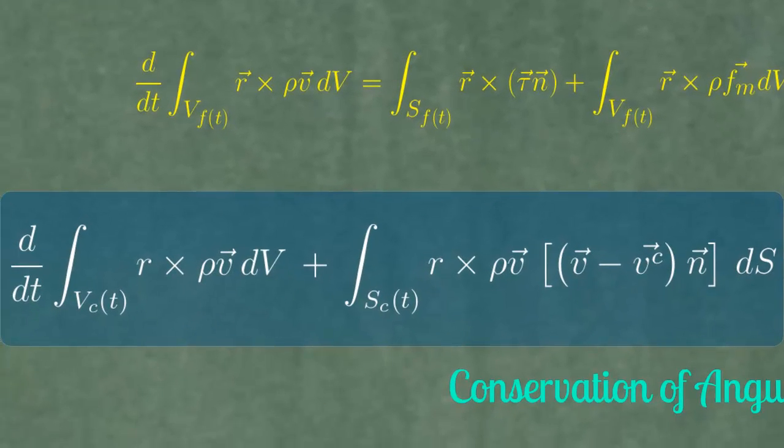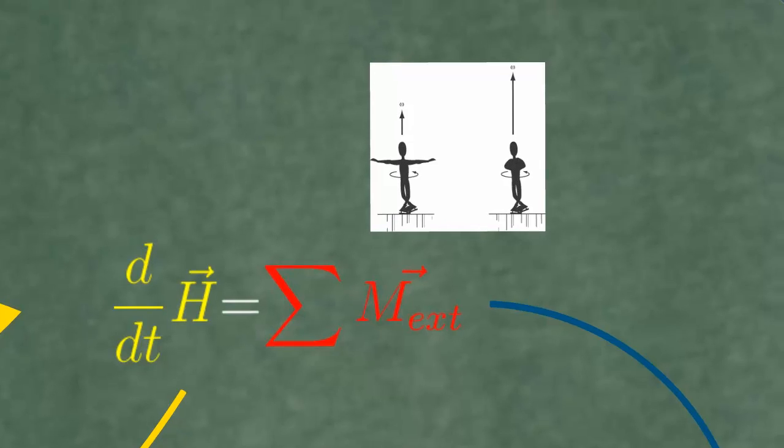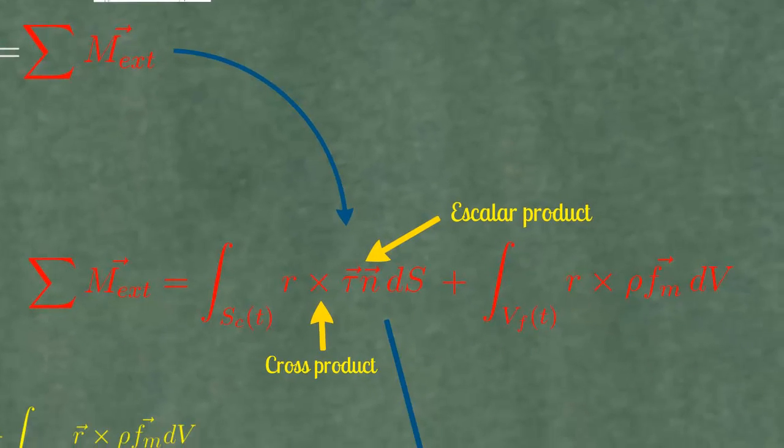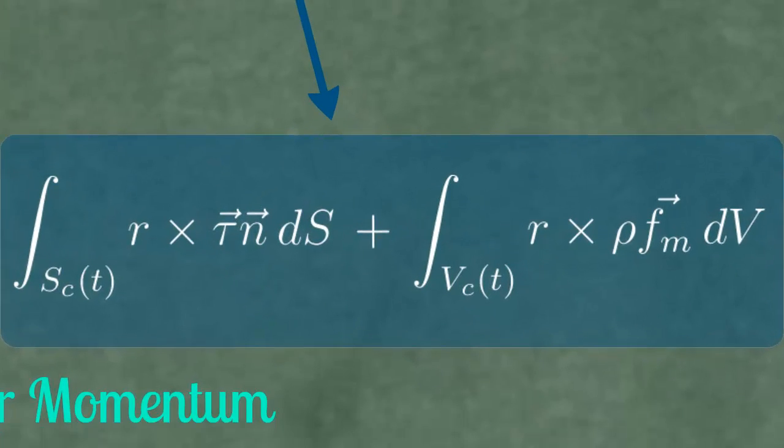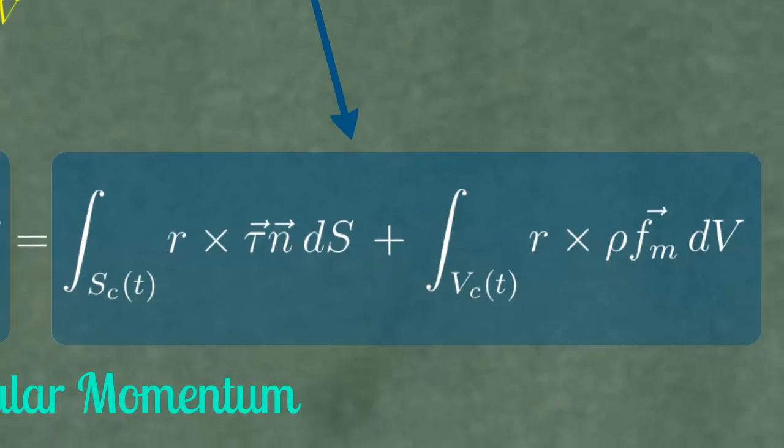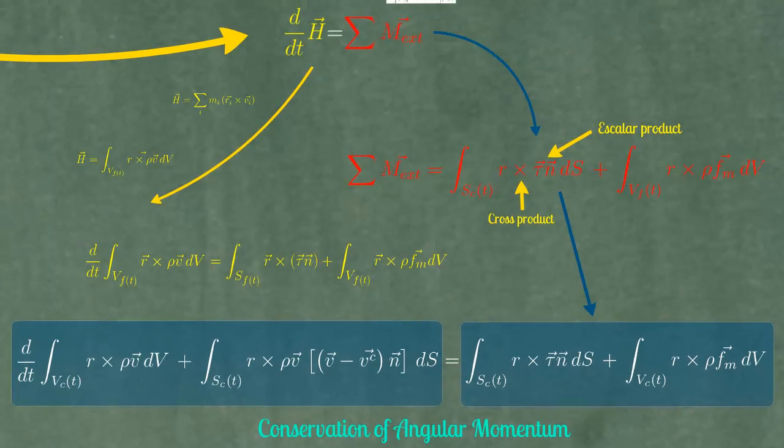The same kind of equations, but with rotational magnitudes. The linear magnitudes of the previous case are now multiplied by the reference vector r. Remember, it's a cross product. And that's the equation obtained by applying the third theorem of transport to conservation of angular momentum.